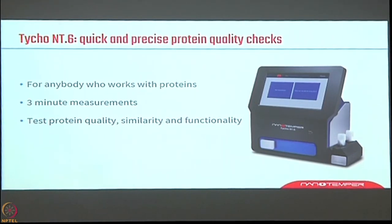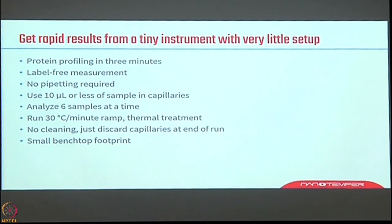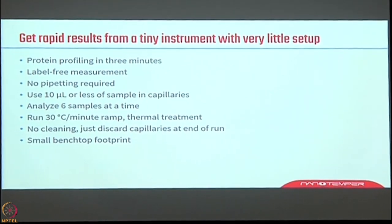The basic principle of this machine is that it can work with any kind of protein — whether it's an antibody, a normal protein, membrane protein, or receptor protein — and gives a three-minute measurement. Within three minutes, you are actually checking the quality and purity of the protein. It is a label-free measurement — not labeling any partner. It checks the intrinsic protein fluorescence, which gives you a label-free inflection temperature very equivalent to the melting temperature.